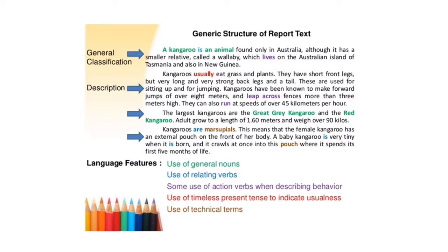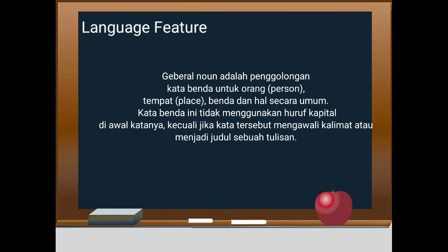Di dalam general classification ini penjelasan secara umum. Jadi misalnya yang dibahas kangaroo. Contoh disini: a kangaroo is an animal found only in Australia. Nah, itu secara umum ya. Lalu descriptionnya: kangaroo usually eat grass and plants, they have short front legs dan seterusnya. Dalam teks kangaroo tadi kita bisa melihat atau menemukan unsur kebahasaan yang digunakan dalam report text.